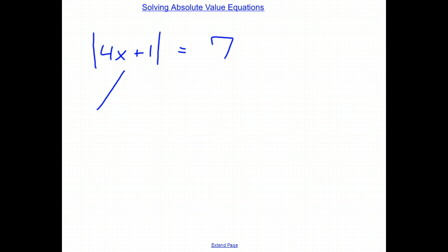The first one is 4x plus 1 equals a positive 7. I know that in order to solve this problem, I need whatever is inside these two absolute value signs to be 7.